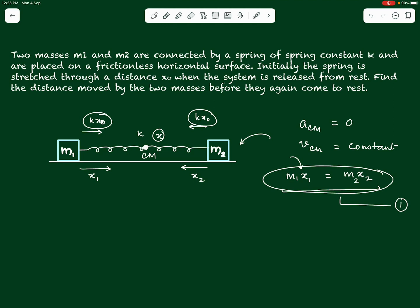To find both x1 and x2 we need a second equation. Let us understand what happens to the system in detail. Initially the spring is stretched and the two blocks start moving towards each other under the spring force. They will come closer and reach a position where the spring returns to its natural length.